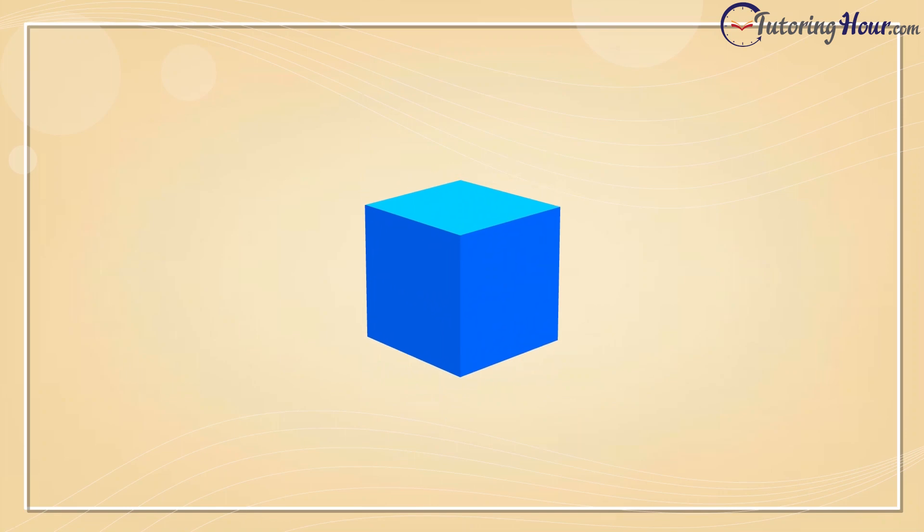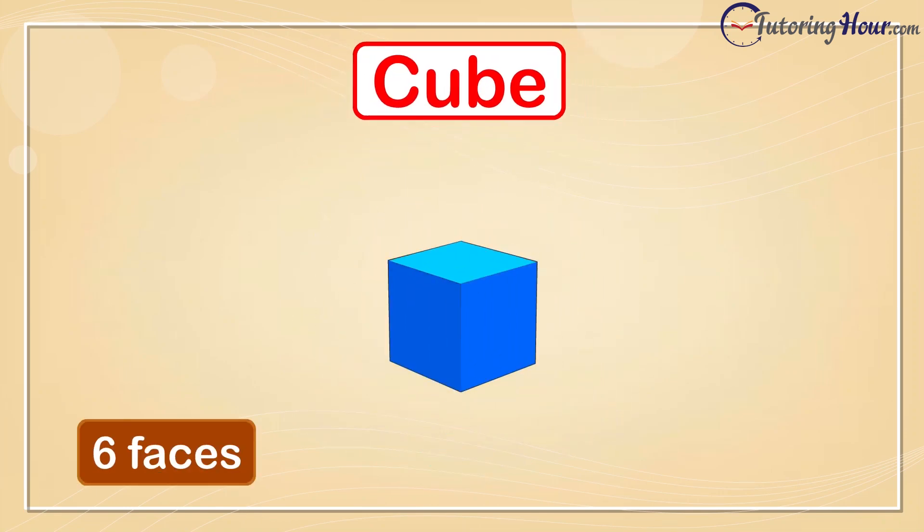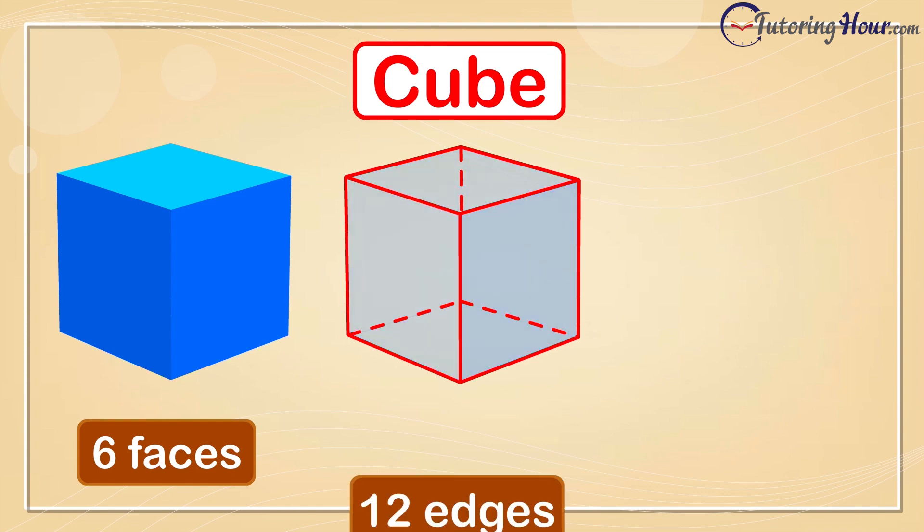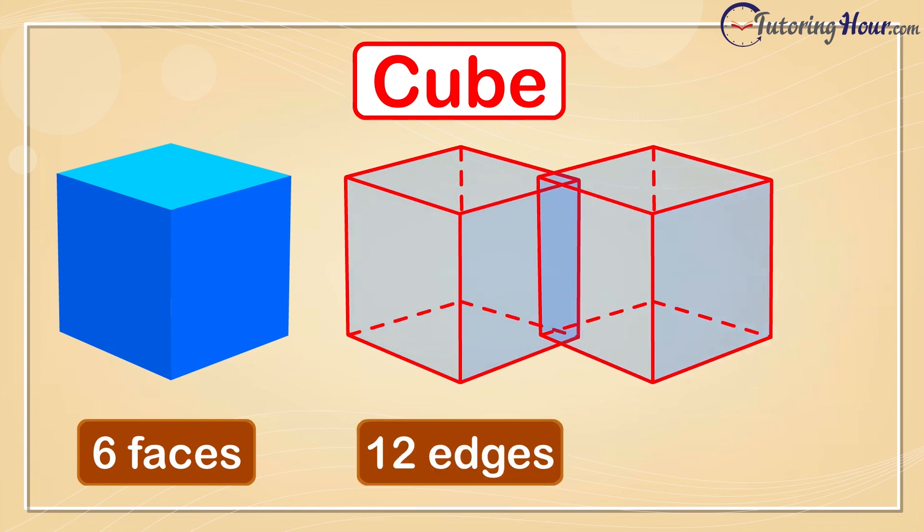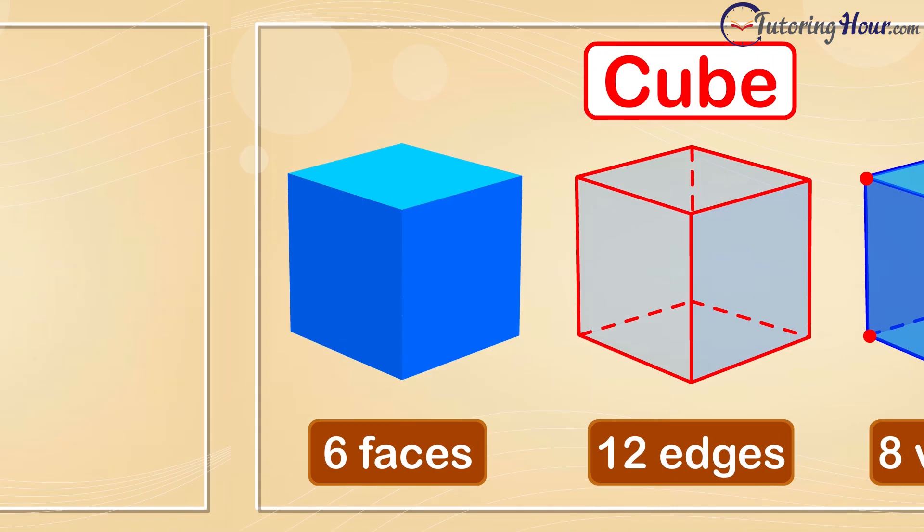Let's move on to our next prism, the cube. The six identical faces of the cube make it a special rectangular prism. Let's find out how many edges there are in a cube. It has 12 edges. Let's find out the number of vertices it has. There are 8 vertices here.